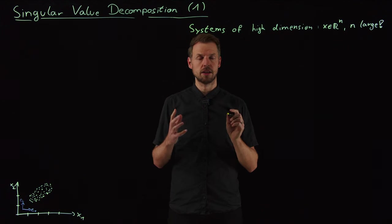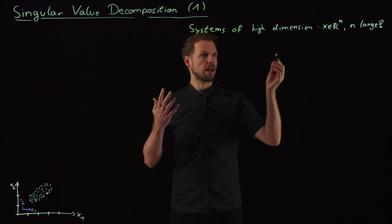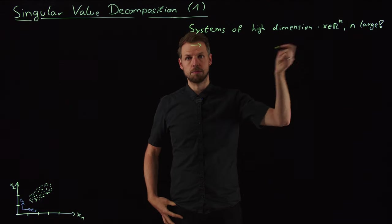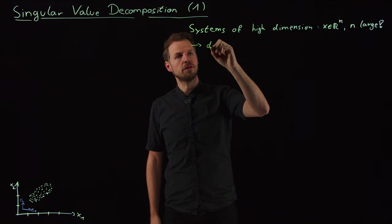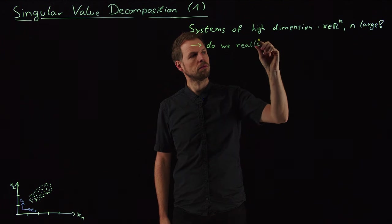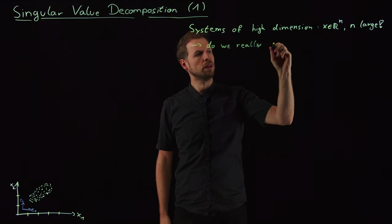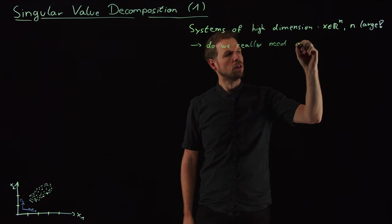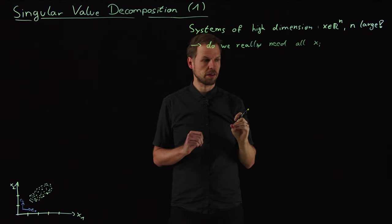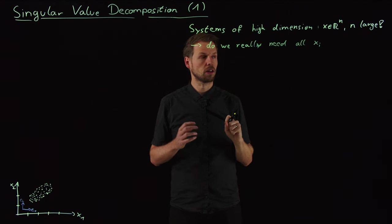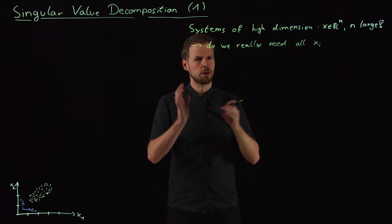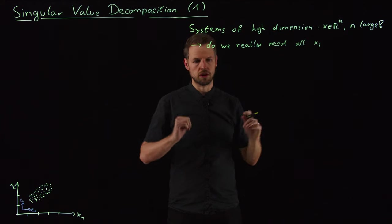So what we want to study here is a reduction. And we start with the question, if we have so many of these states, do we really need all the xi? So we have talked about fluid flows, for instance, or other distributed systems where you can think of the situation that a particular pixel, or one single measurement, might not be particularly relevant for the overall system.